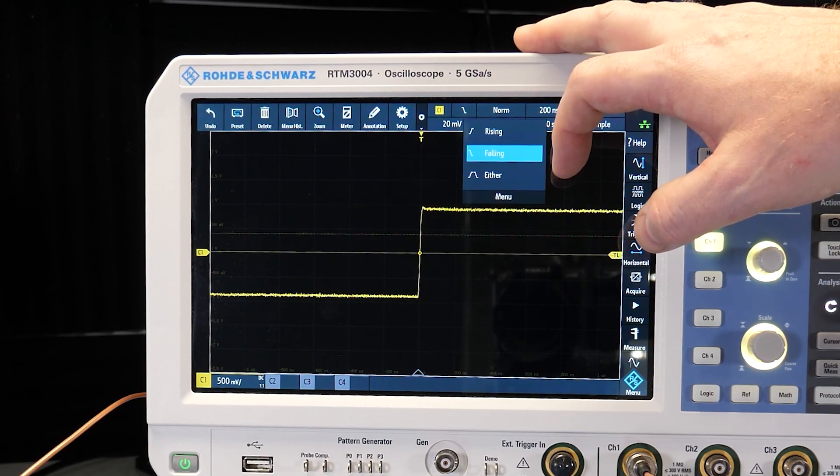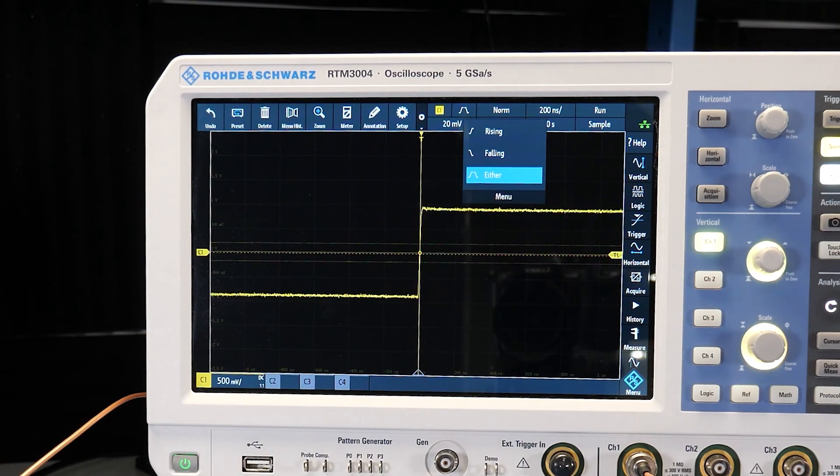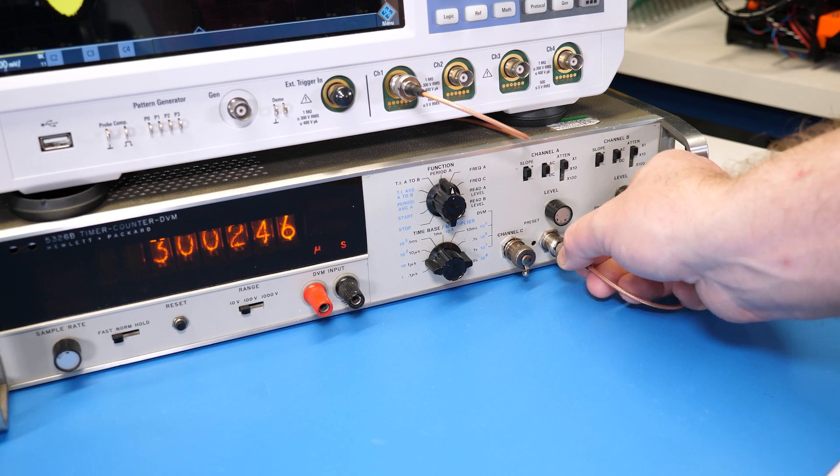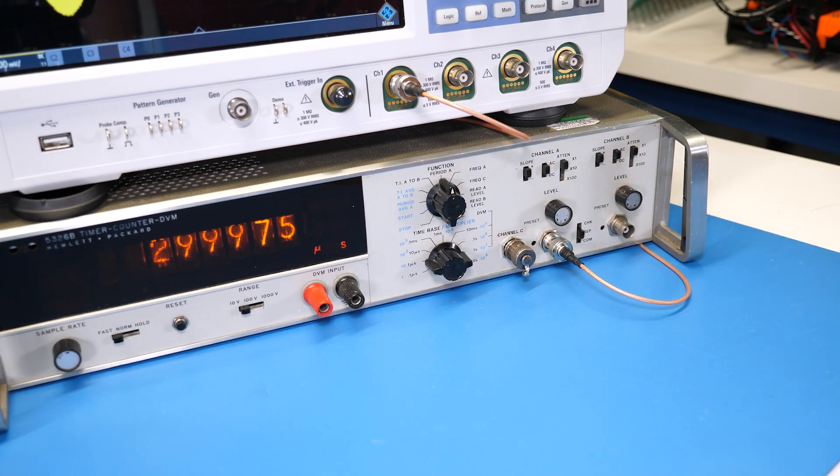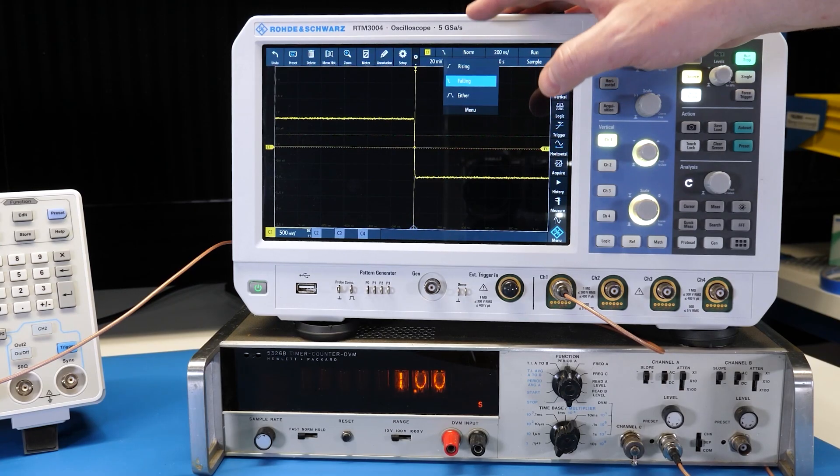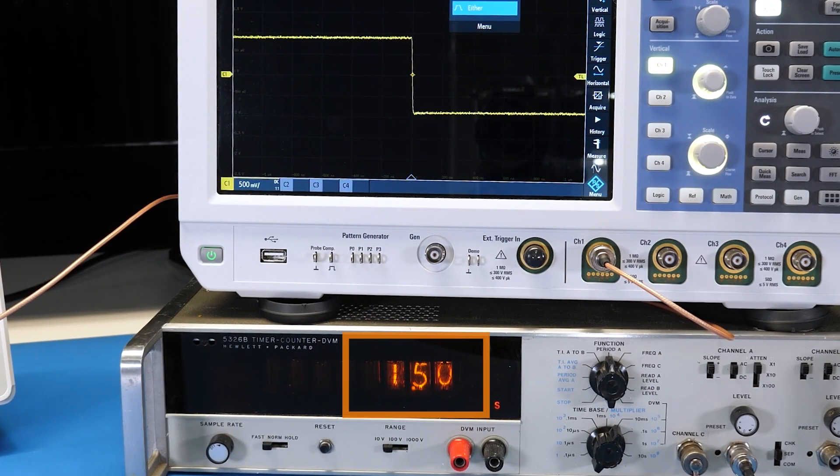Speaking of transitions, some scopes let you choose rising, falling, or both edges. But both is not really an or condition. It is rising followed by falling. Let me demonstrate. I connected the oscilloscope's aux out to a very modern counter. Each time the scope triggers, it generates a pulse and the counter shows the period between them. Since the arbitrary waveform generator outputs a one hertz clock, we see a rising or falling edge once per second. But when we set for both, the update now takes about 1.5 seconds and not the expected 500 milliseconds.